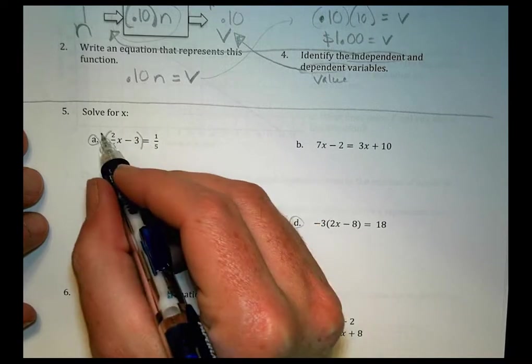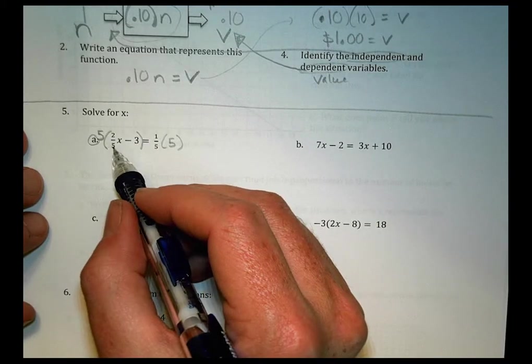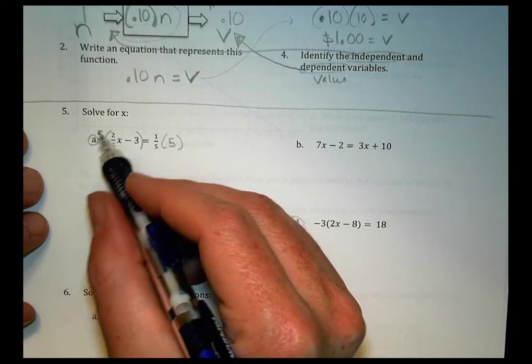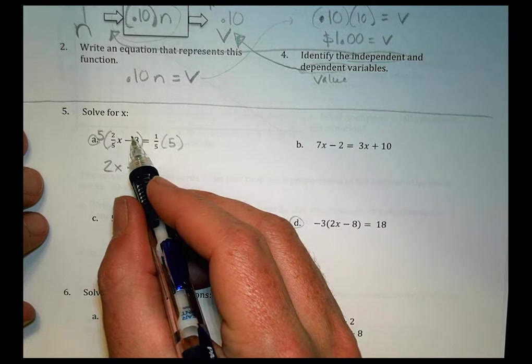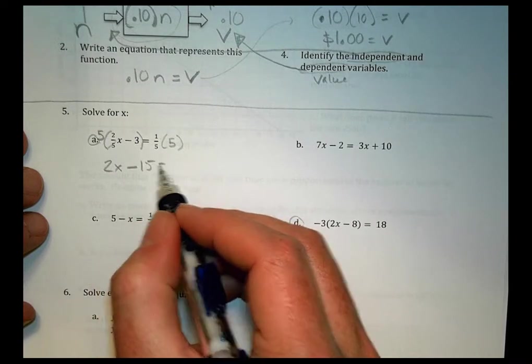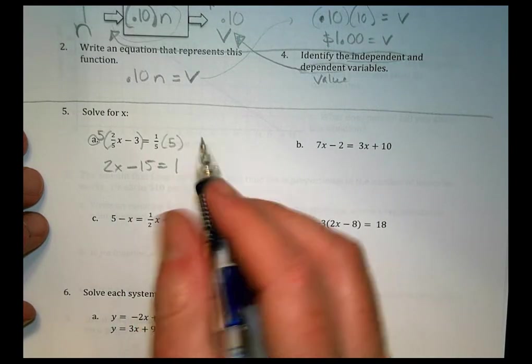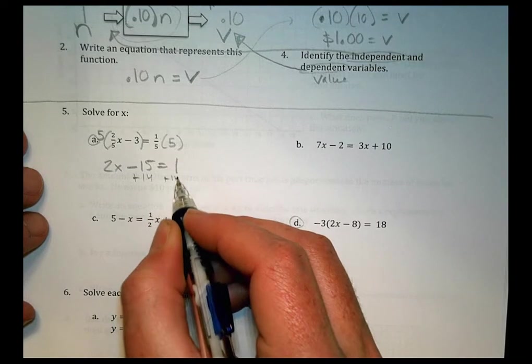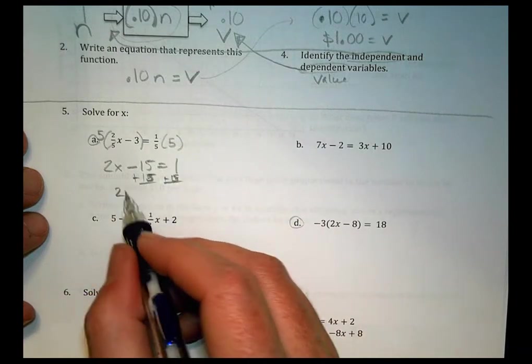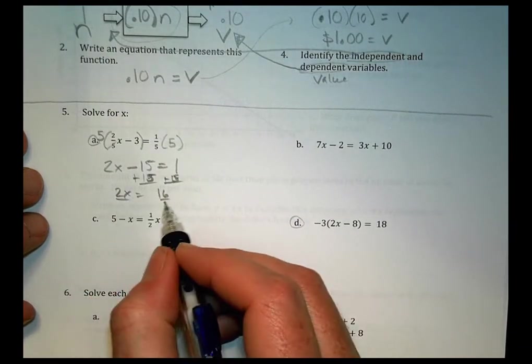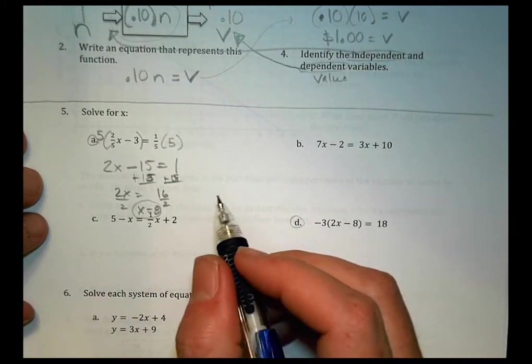If I take this, if I multiply this side by 5 and I multiply this side by 5, 5 times 2 over 5, those would reduce out, cancel out, and you're left with just 2x here. But 5 times negative 3 is a negative 15, and that equals 5 times 1 fifth, which is 5 over 5, which is just 1. So this is a little bit easier to solve here. I can add 15 to both sides. So I have 2x equals 16. Divide both sides by 2, and we're left with x equals 8 as a solution.